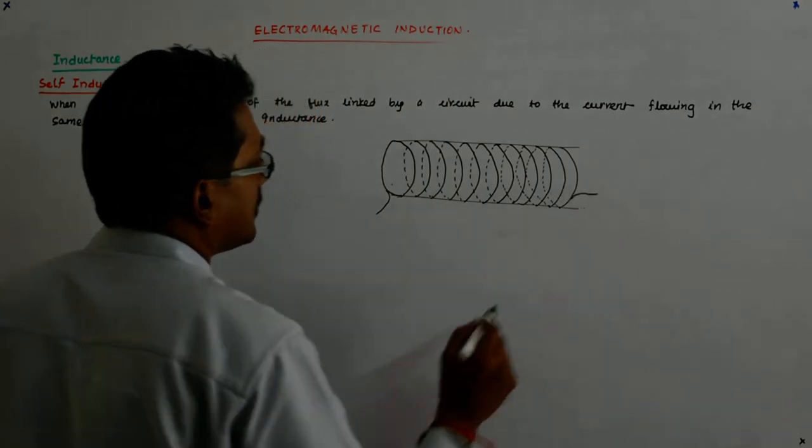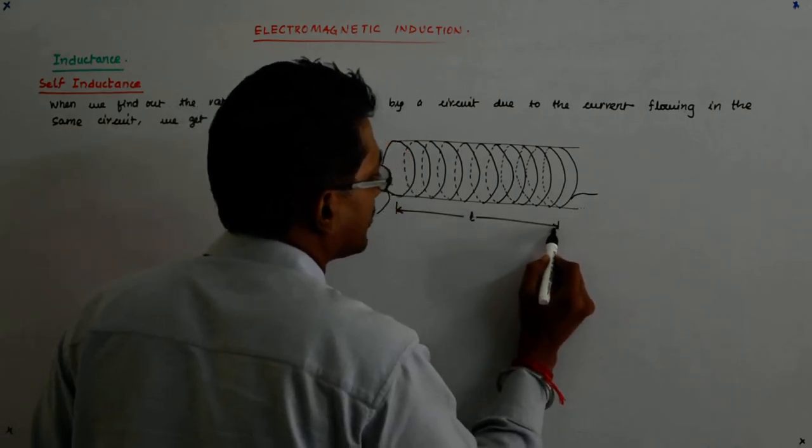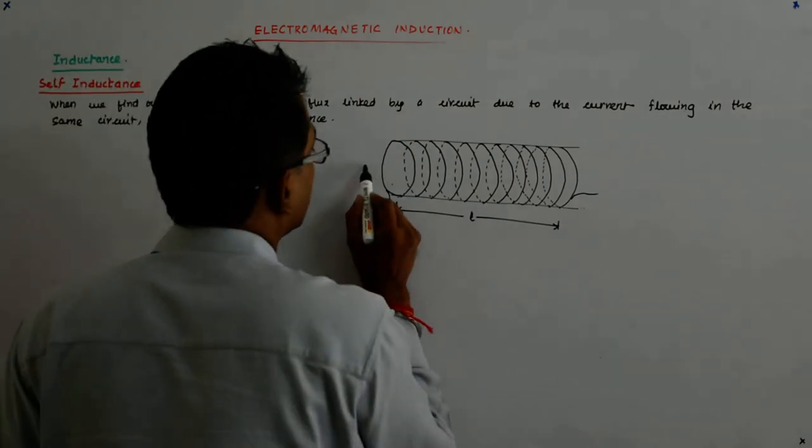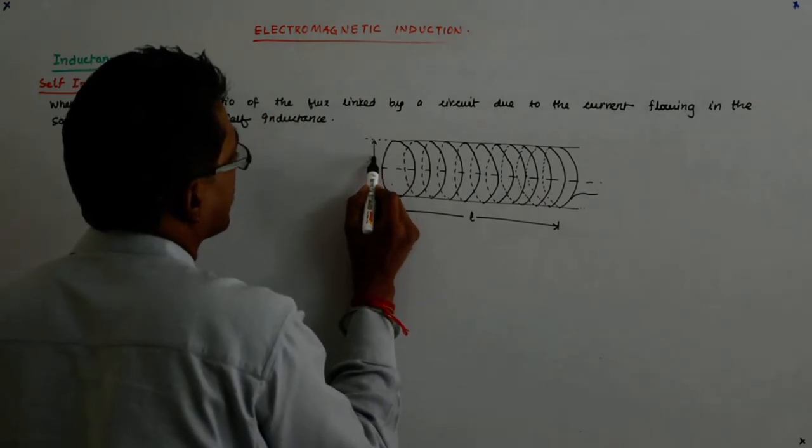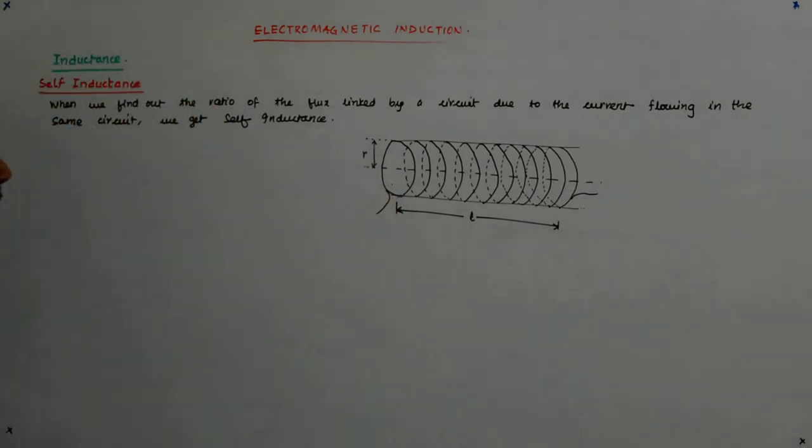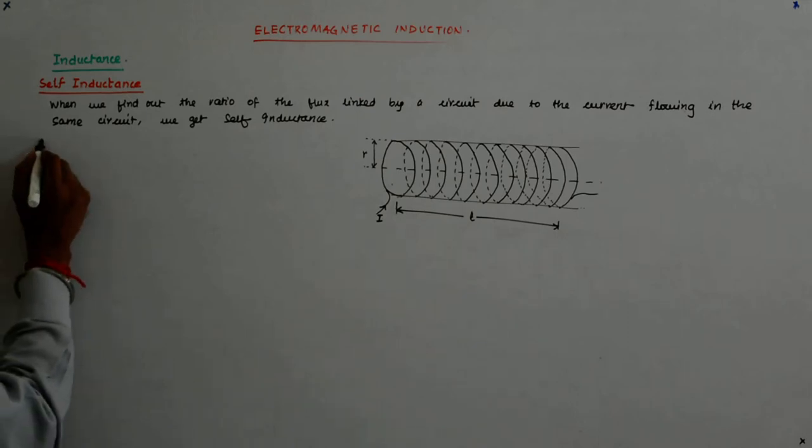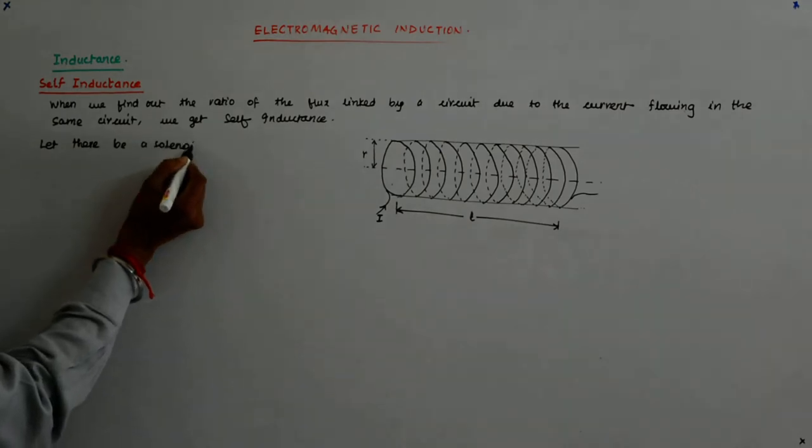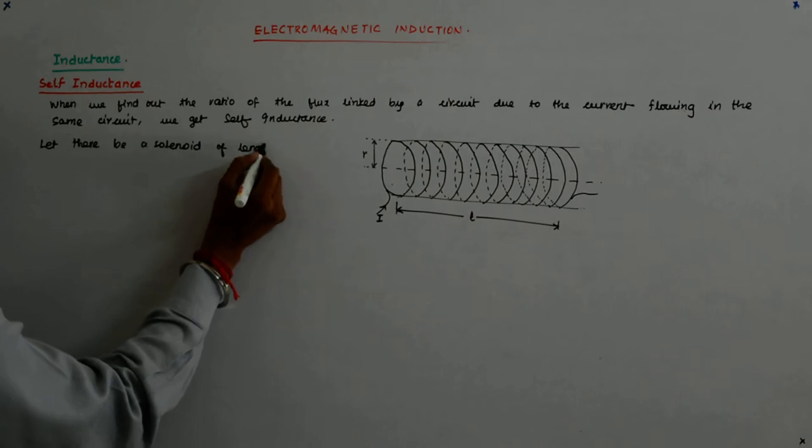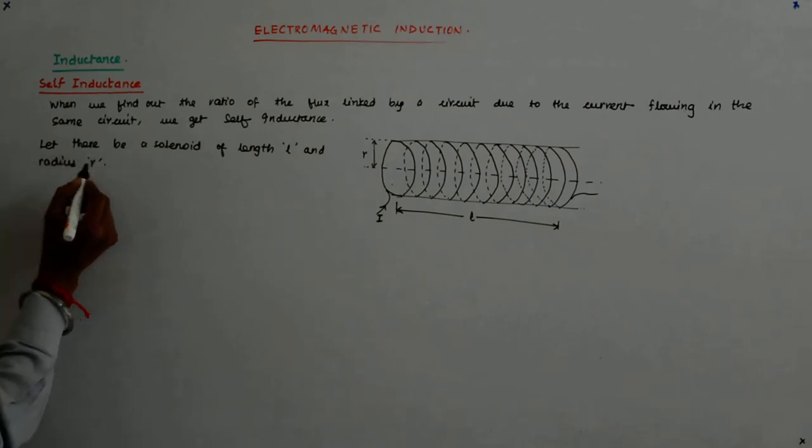I have a solenoid like that with a length L and with the radius R, and a current I. Let there be a solenoid of length L and radius R.